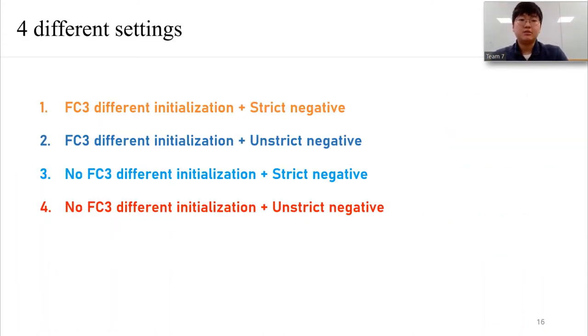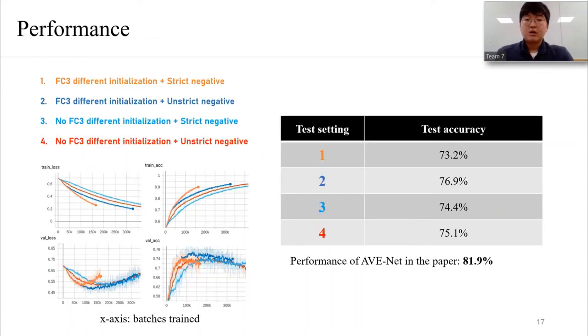So these are four combinations that we can make with the settings on the previous slide. We trained our models with four different settings. The table shows the test accuracy of predicting the correspondence. Using unstrict negatives, which are harder negatives, shows better test accuracy. This means that the model is able to generalize better by learning the harder negatives.